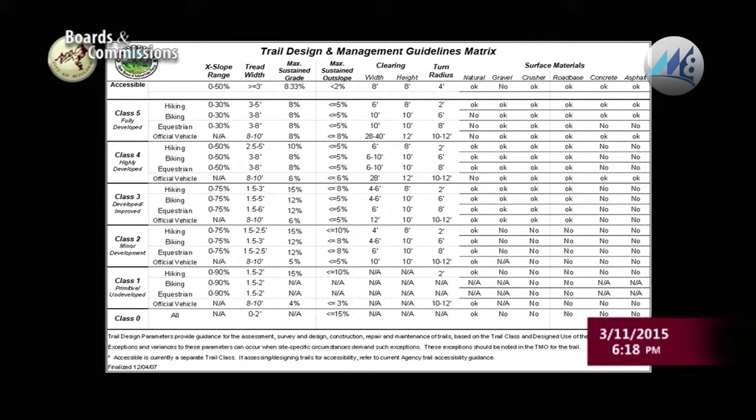I also wanted to touch on OSMP's trail design and management guidelines matrix, available on our website. It provides foundational criteria around trail management decisions based on class of trail — class one through five, with class one being less developed, remote, and rugged, and class five being more developed. It also looks at user groups — hiking, biking, and equestrian — and factors like maximum trail grade, trail width, and surfacing material. This is foundational information we use when looking at trail alignment and design criteria.